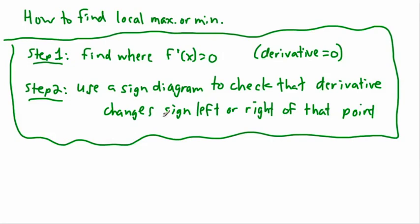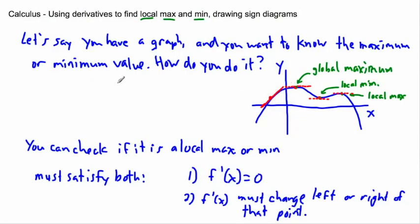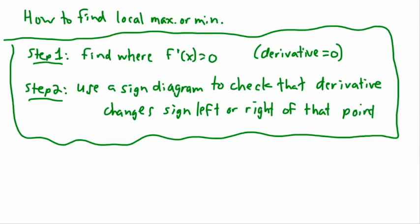Maybe you're an economist and you want to find where the maximum profit is. If you have an equation for profits, you don't even have to graph it. Just take your equation for profits, find where your derivative is zero, then check left and right — and that tells you how many things you have to sell to have maximum profit. That's just one example of finding a maximum or a minimum. So this tells you the x value for it, and in the next video I'm going to show you an example of how to use a sign diagram.